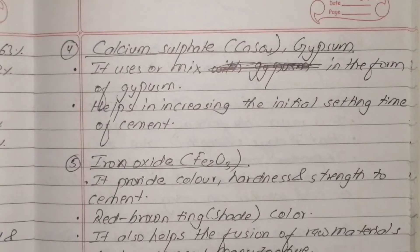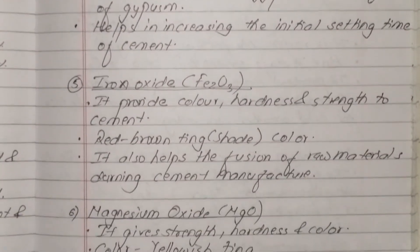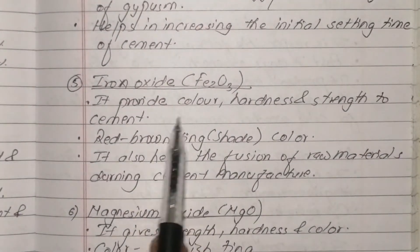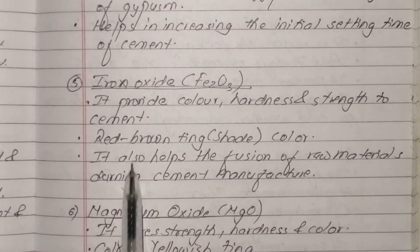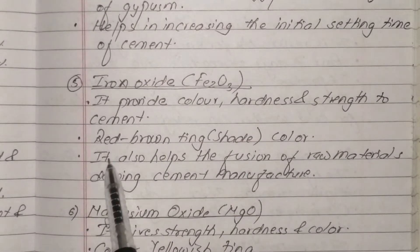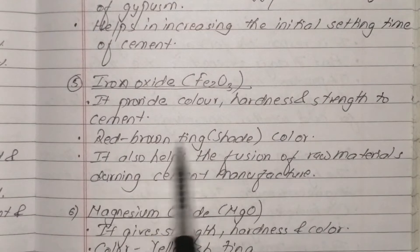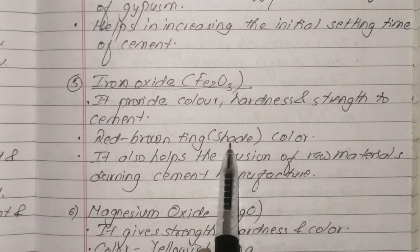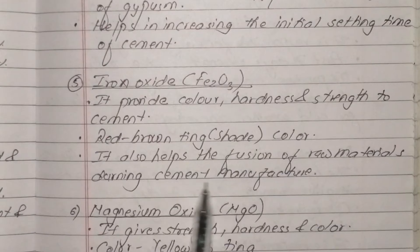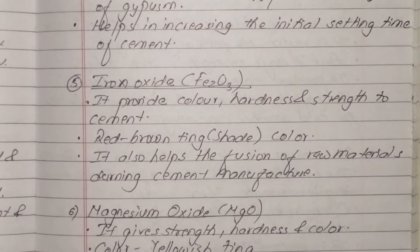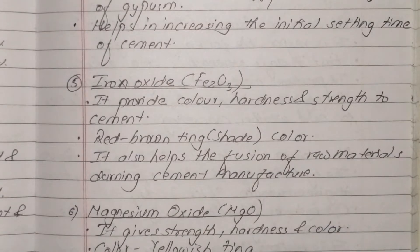Iron oxide, Fe2O3, provides color to the cement - a red-brown or pink shade color. It also aids the fusion of raw materials during the cement manufacturing reaction and helps with disintegration.